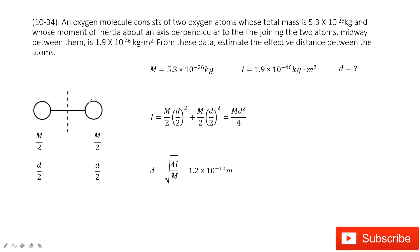As in this system, you can see it consists of two oxygen atoms. And then the total mass is given, right? So for each one, for each oxygen atom, the mass is half of this mass.